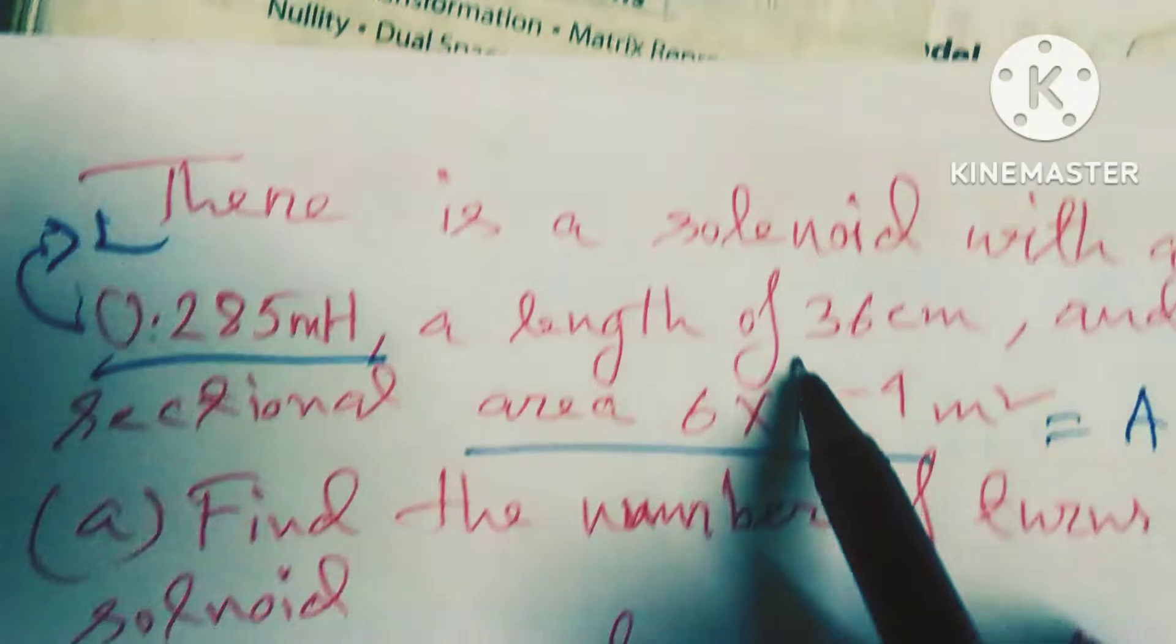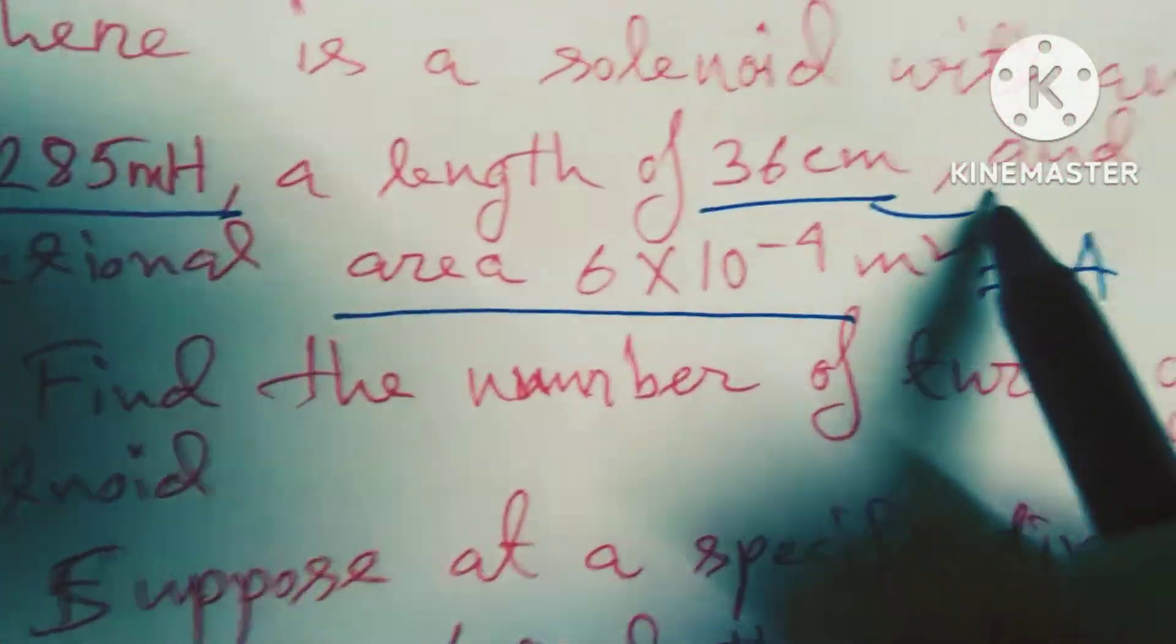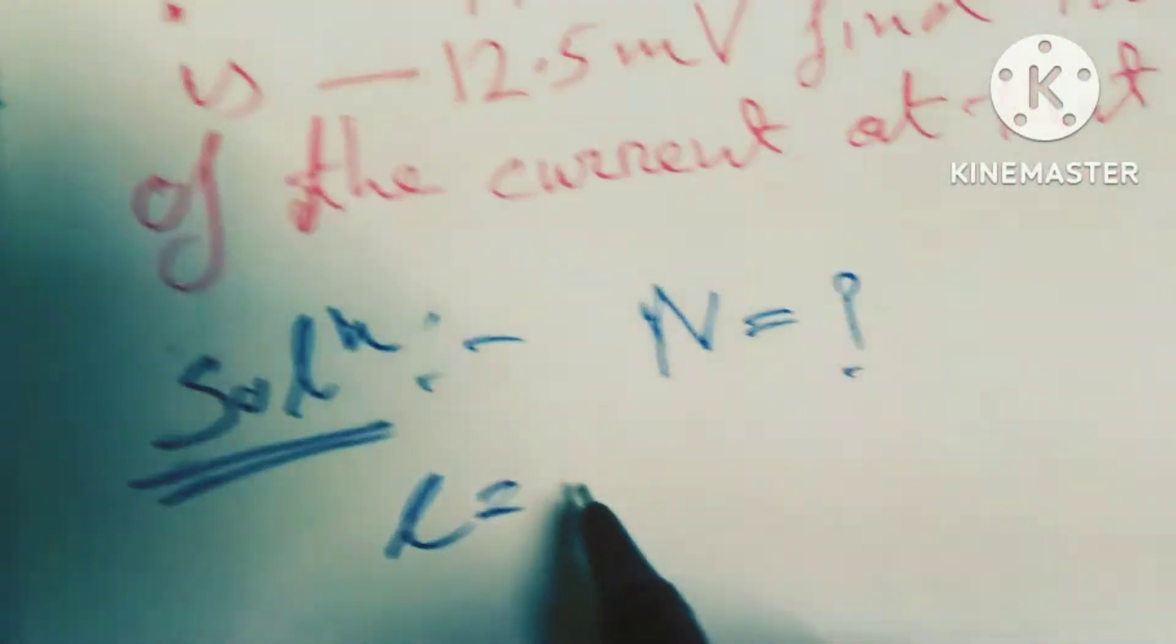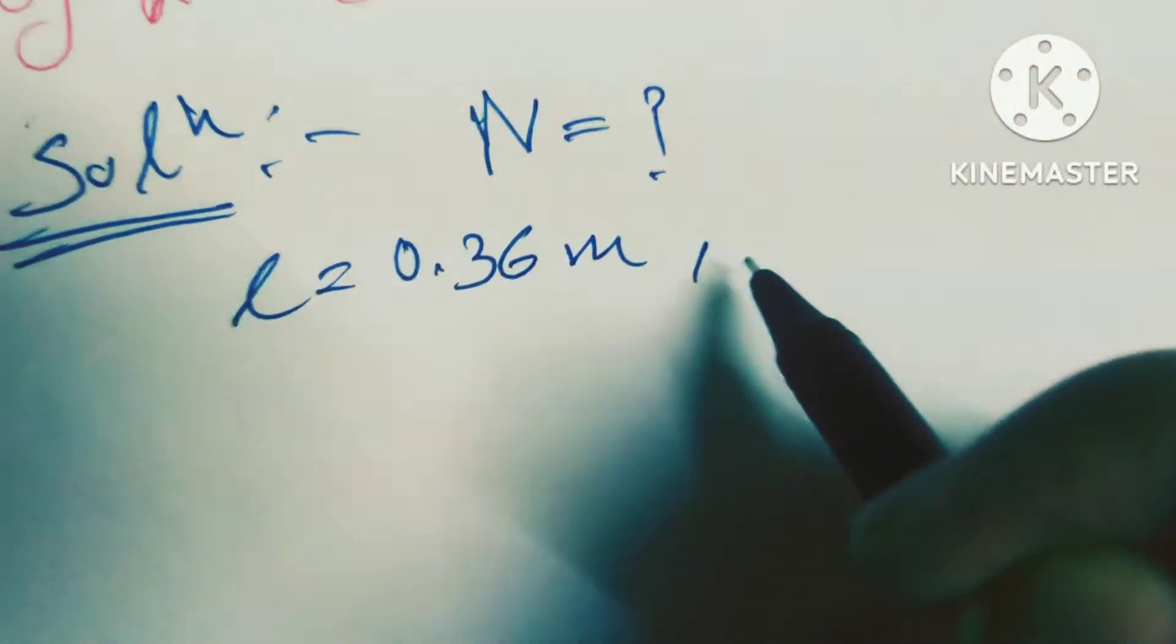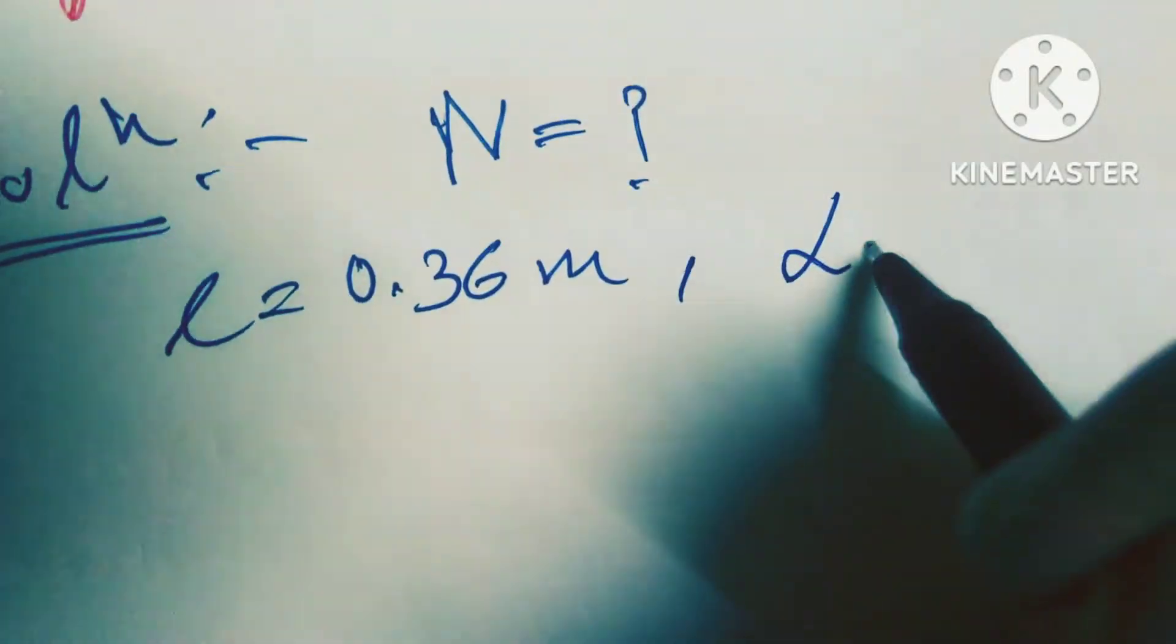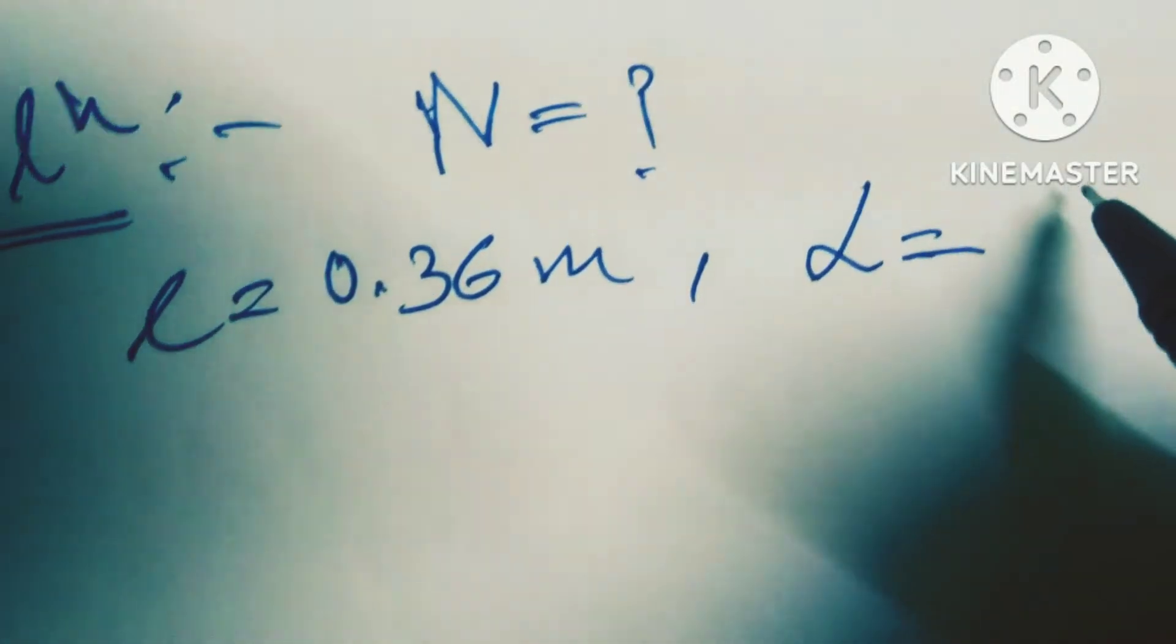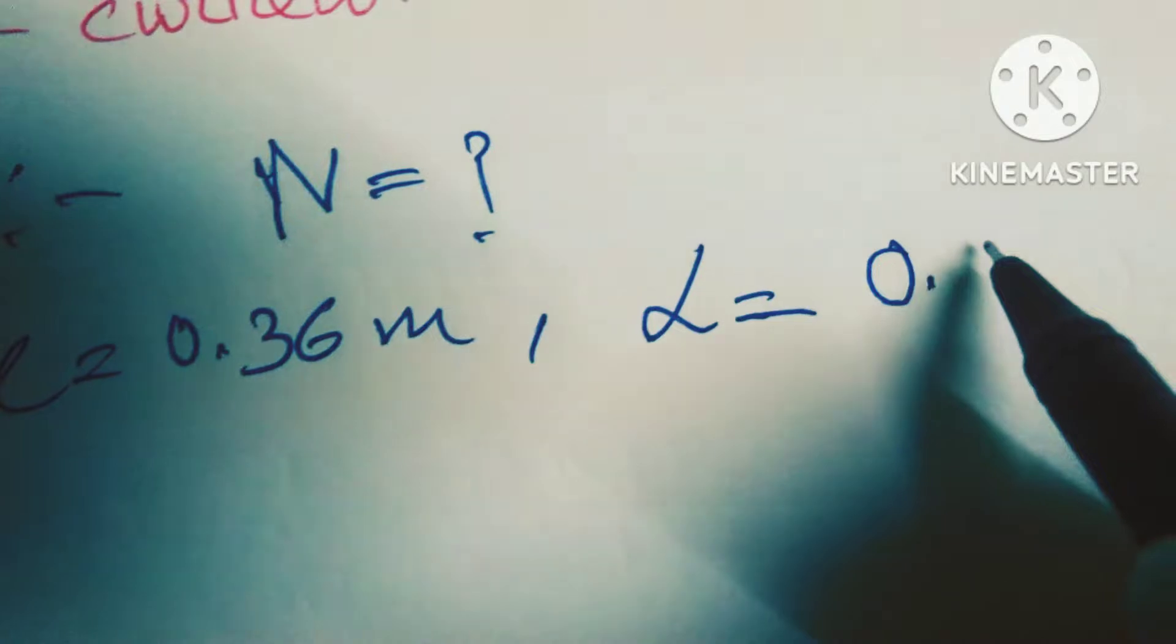So friends, length l equals 0.36 meters, and L equals 0.285×10^-3 henry.